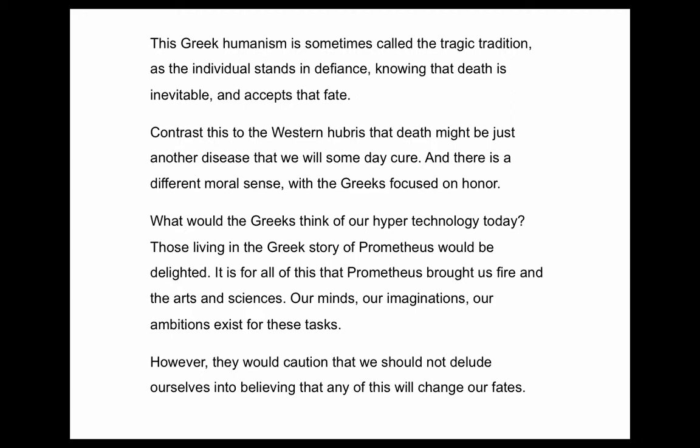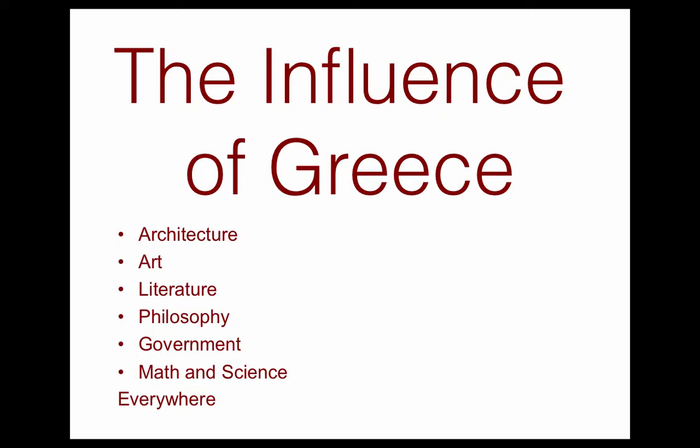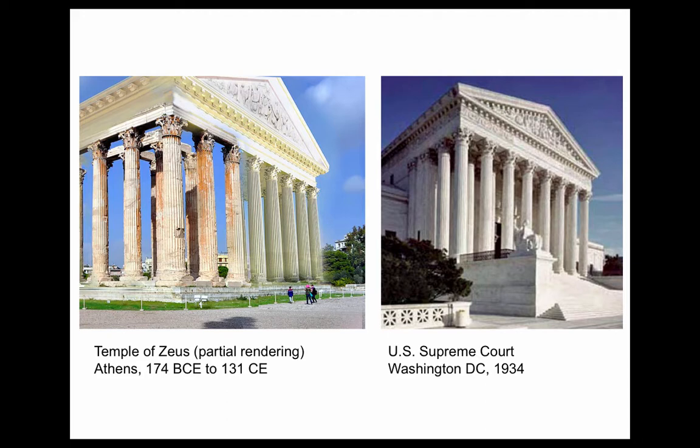What would the Greeks think of our hyper-technology today? Those living in the Greek story of Prometheus would be delighted — it was for all of this, all of our science, technology, going to the moon, that Prometheus brought us fire in the arts and sciences. Our minds, imaginations, and ambitions exist for these tasks. However, the Greeks would caution modern Westerners that we should not delude ourselves into believing that any of this will change our fate. The influence of the Greeks — architecture, literature, art, philosophy, government, math and science — all of these disciplines today have threads of Greek influence in them.